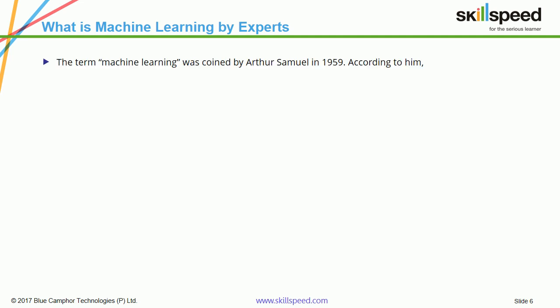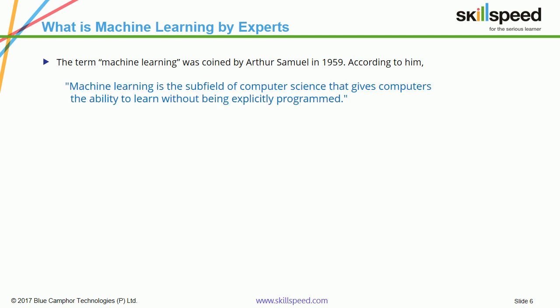Even though you may feel that the term machine learning is very new, it is not. The term machine learning was actually coined long back in 1959 by Arthur Samuel. Arthur Samuel wrote that machine learning is the sub-field of computer science that gives computers the ability to learn without being explicitly programmed.